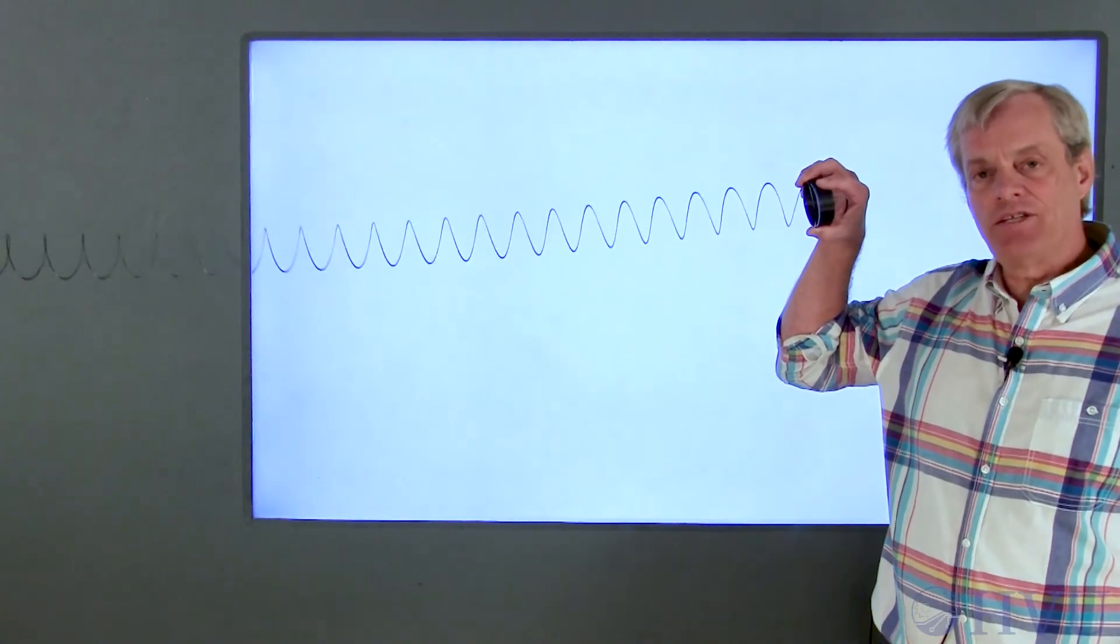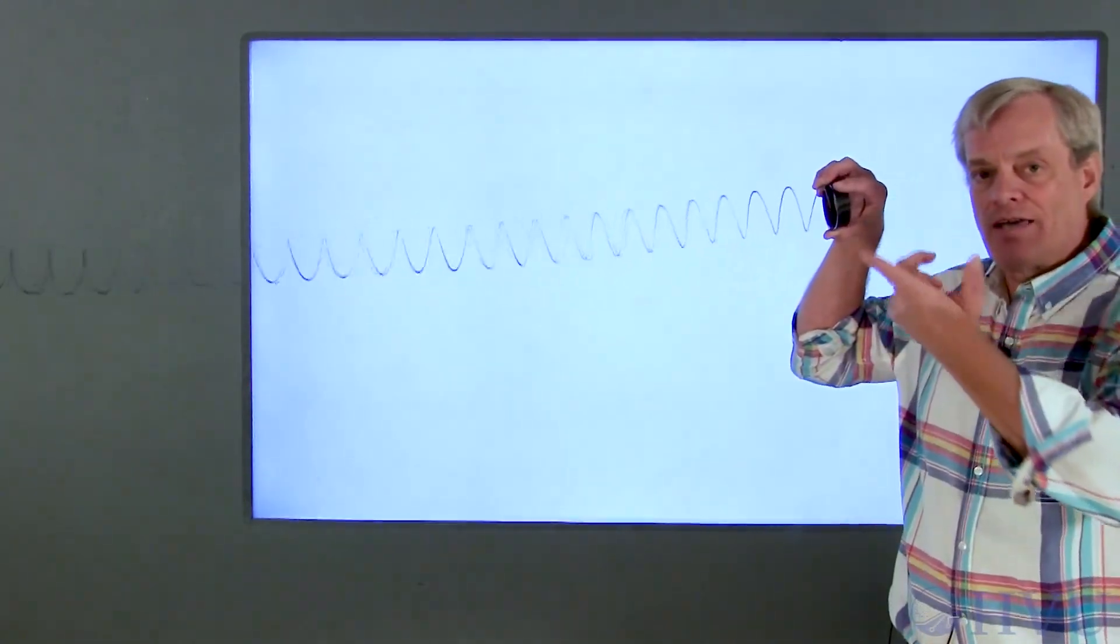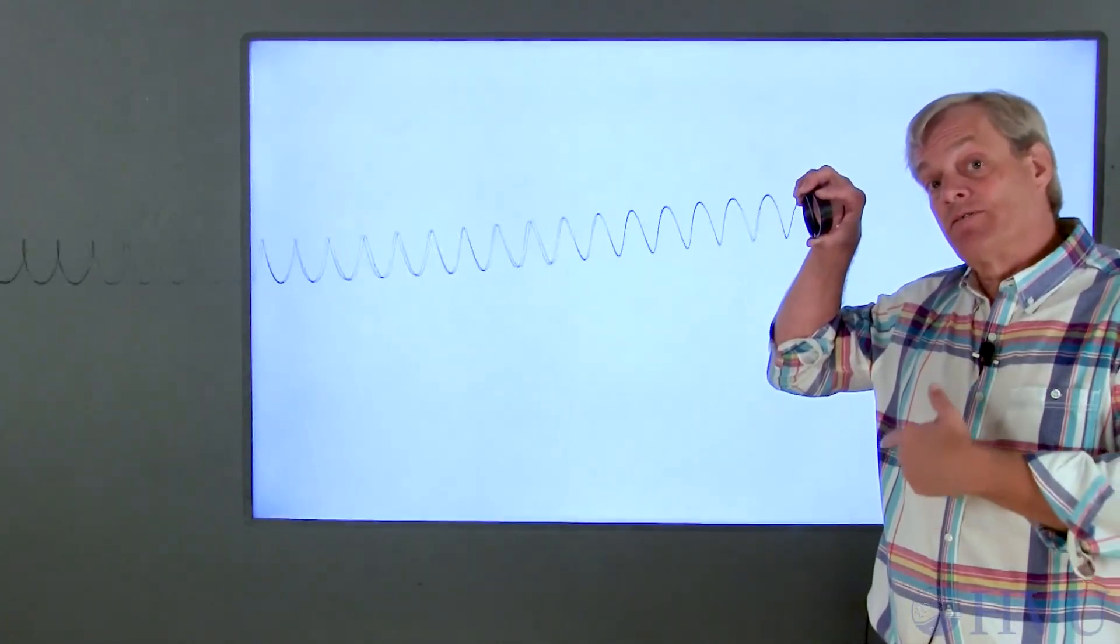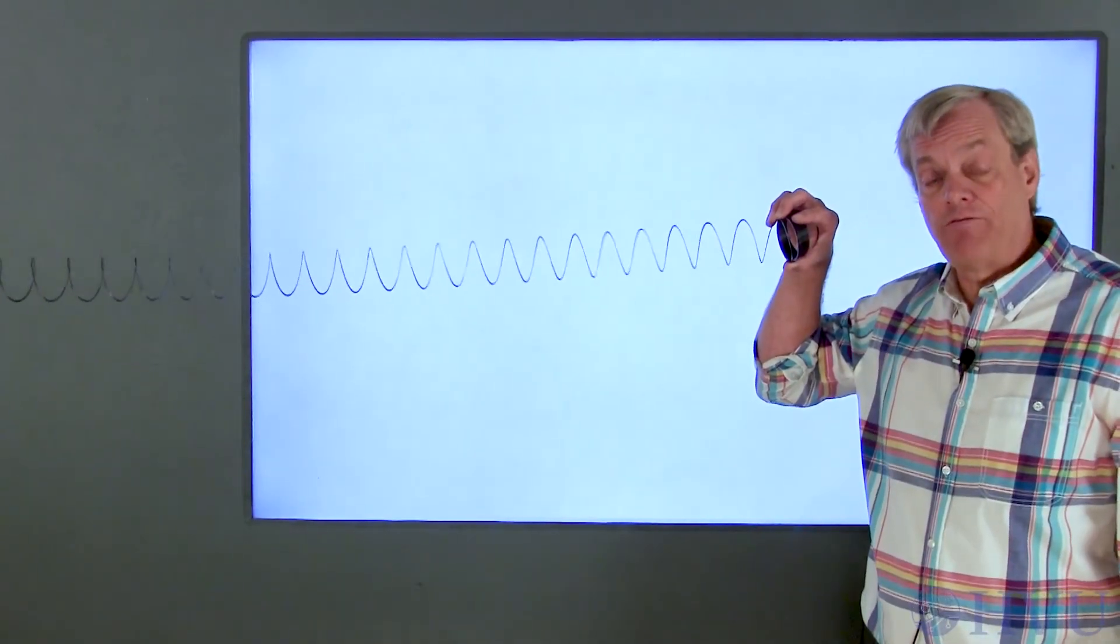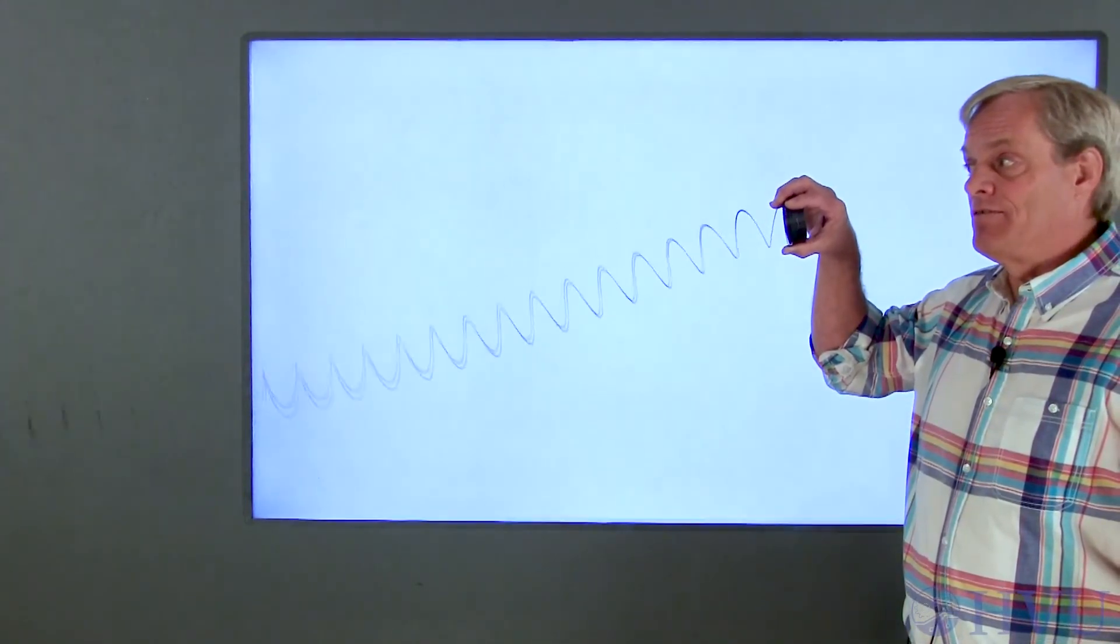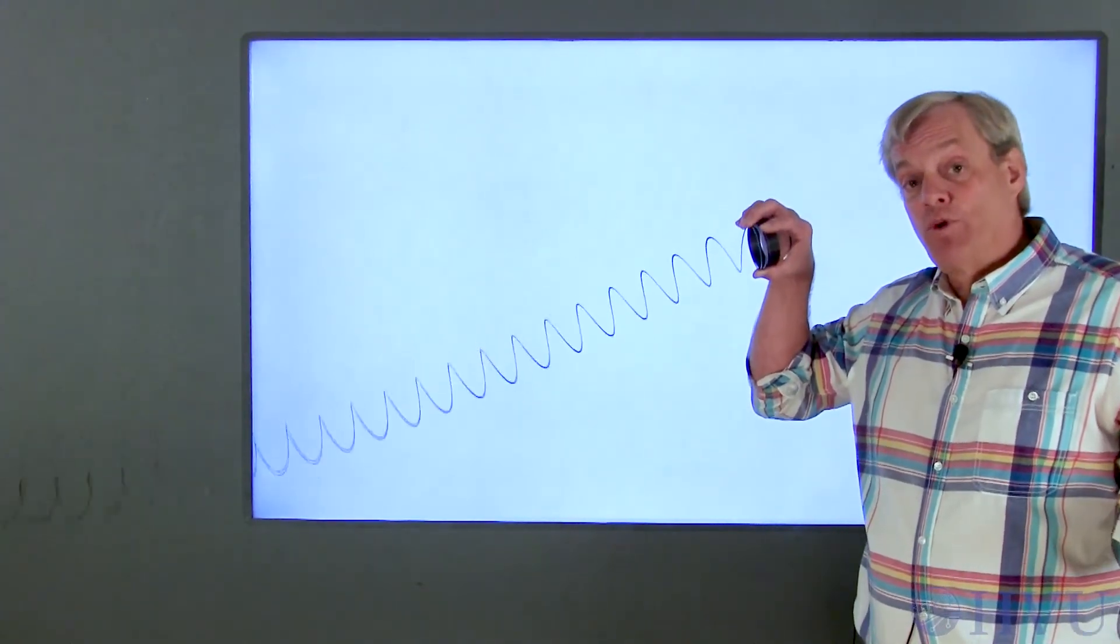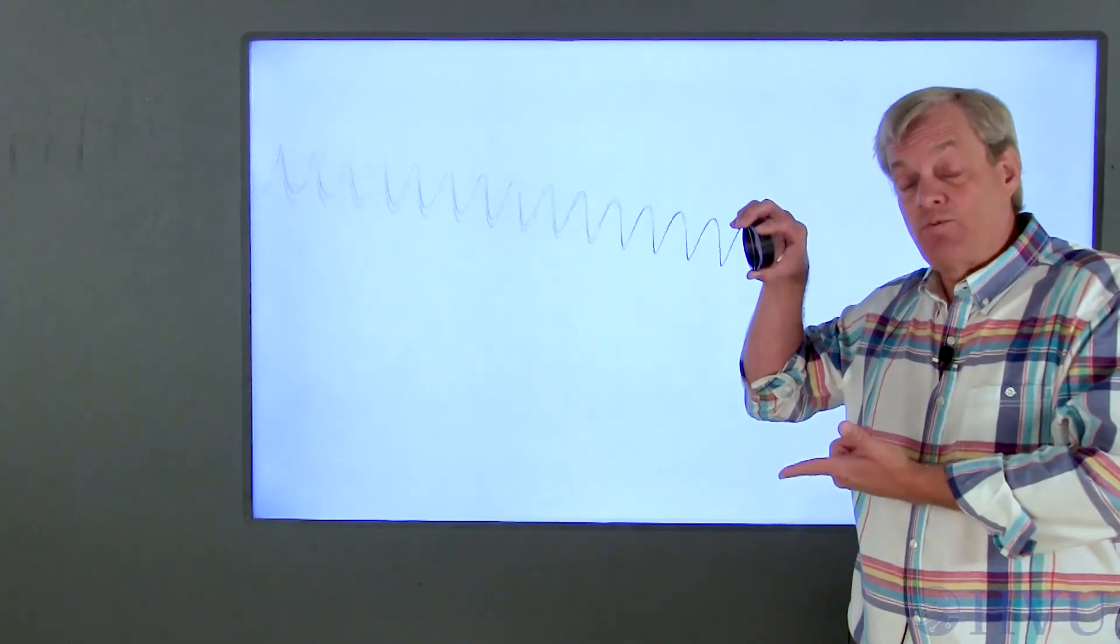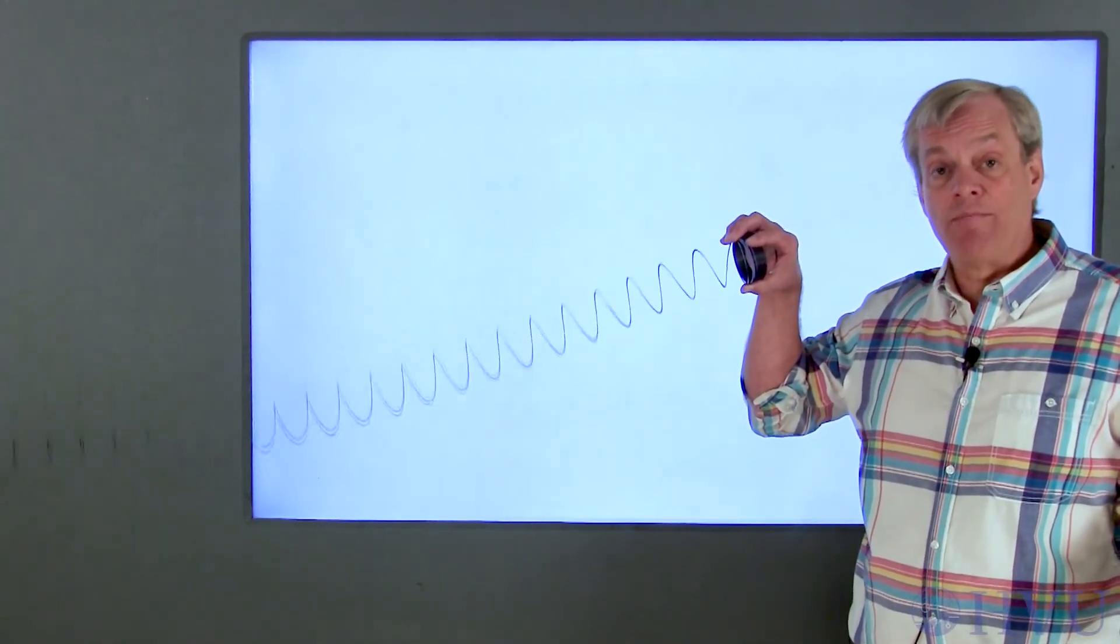If I stretch the slinky this way and pluck one end, I have a wave going back and forth. Not all parts of the slinky are behaving the same way. I would have to use a distributed parameters model for this. Likewise, if I oscillate this end of the slinky in this direction, the system response is a function of both time and space. This requires a partial differential equation. It is a distributed parameter system.